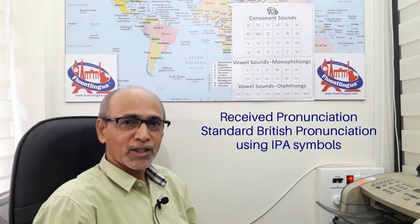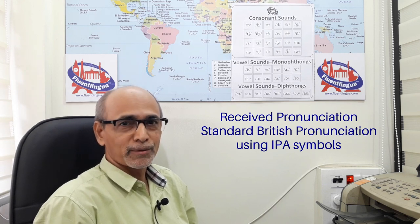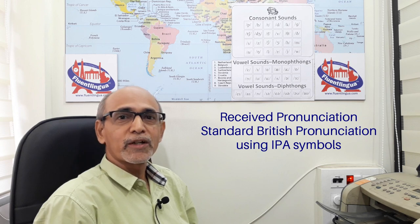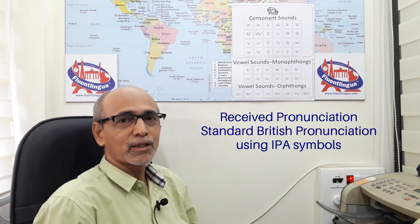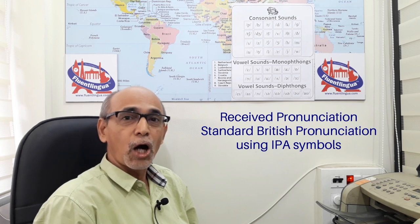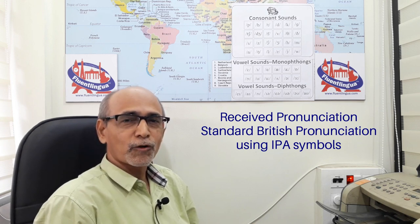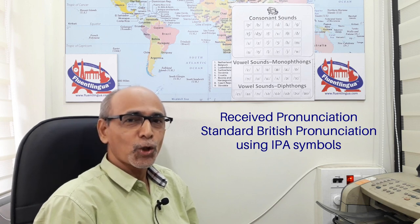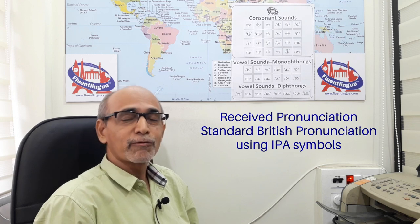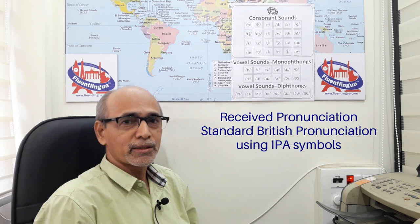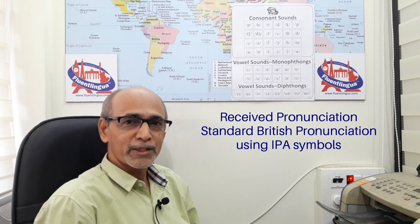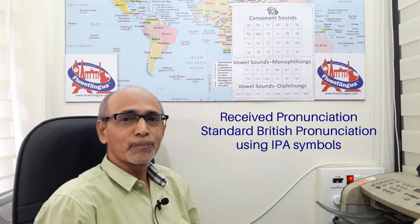When we want to discuss pronunciation, we must have a model in mind. For this particular video, we have taken RP, the standard British variety of English, as a model. It is not necessary that you stick to only this variety of English, but for all practical purposes, for learners of English — mainly non-native learners of English in India — it will be good to have RP as a model. We have a lot of material available in RP and many teachers are also trained in the standard British variety of English.